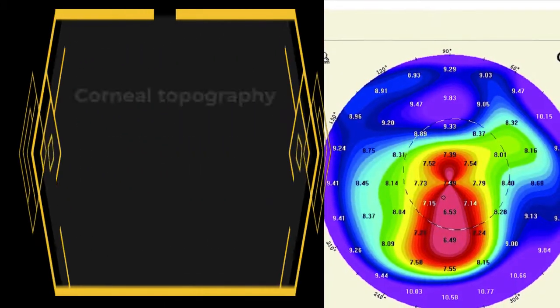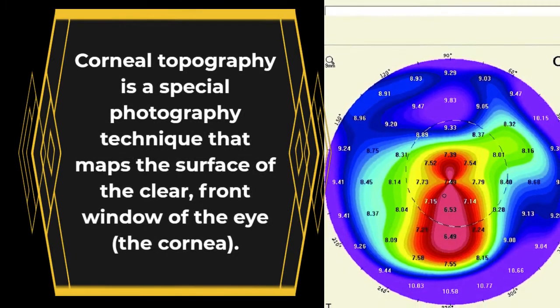What is corneal topography? Corneal topography is a special photography technique that maps the surface of the clear front window of the eye, the cornea.